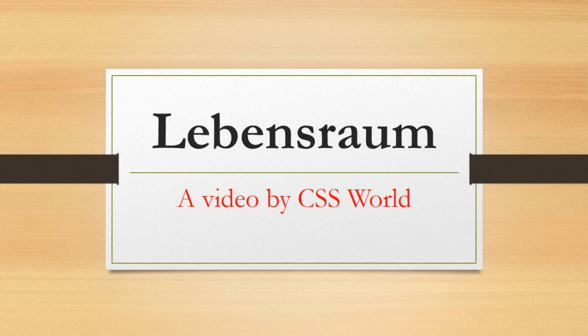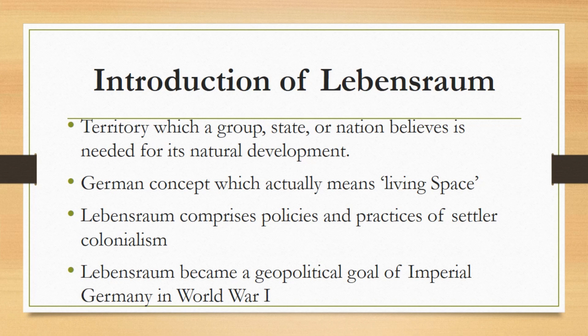Hello everyone, welcome to CSS World. In this video we will cover the idea of Lebensraum, which was one of the top reasons behind World War II. Lebensraum is basically the territory which a group, state, or nation believes is needed for its natural development. It is a German concept which actually means 'living space.' The German concept of Lebensraum comprises policies and practices of subtle colonialism which proliferated in Germany from the 1890s to 1940s, and became a geopolitical goal of imperial Germany in World War One between 1914 and 1918.